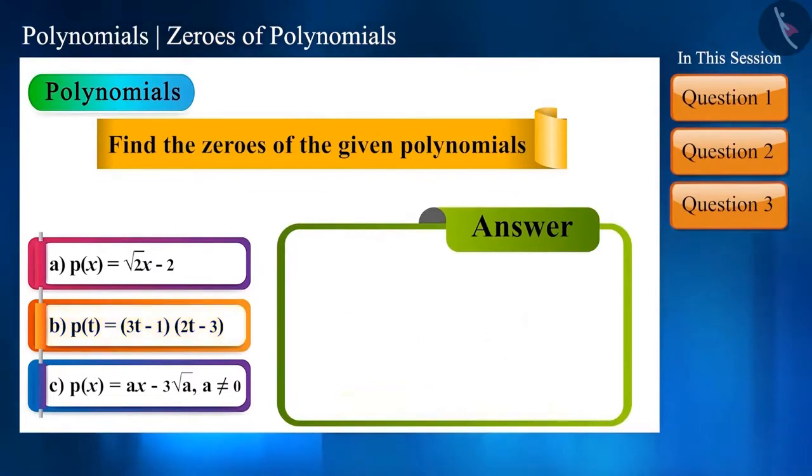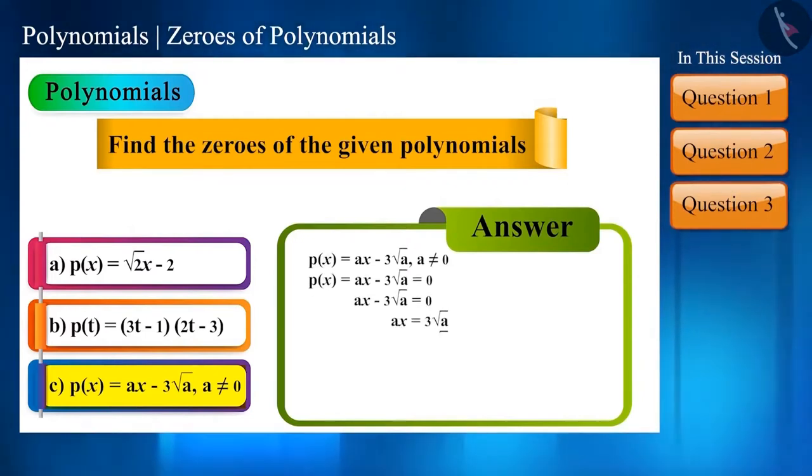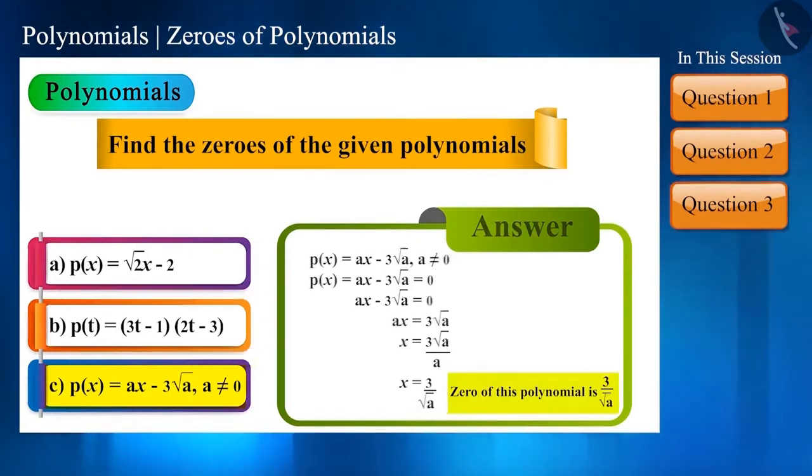Now, let us go to the next polynomial. P(x) = ax - 3√a, where a ≠ 0, which on solving, we get 3/√a. The zero of this polynomial is 3/√a.